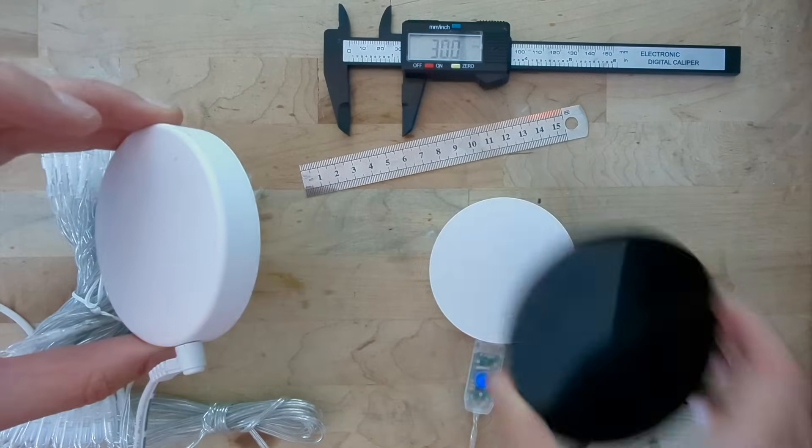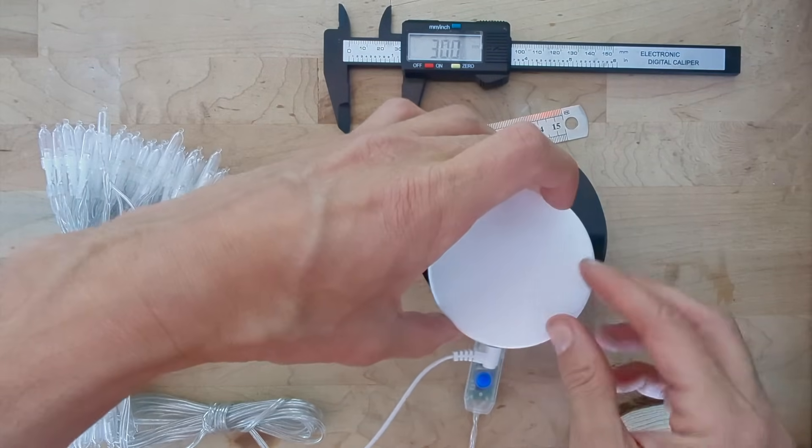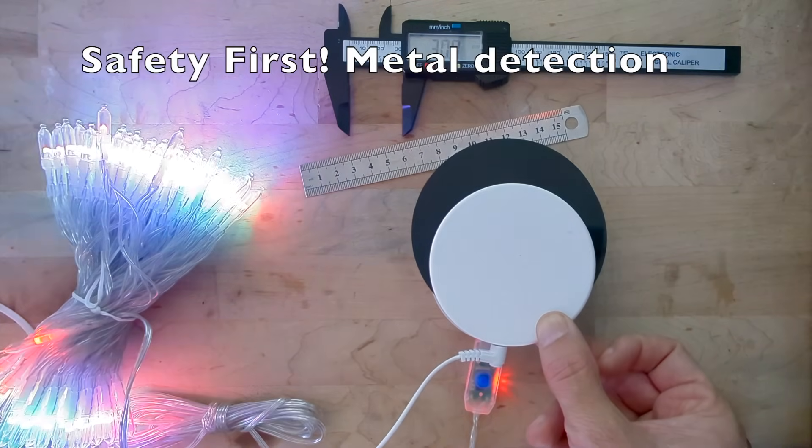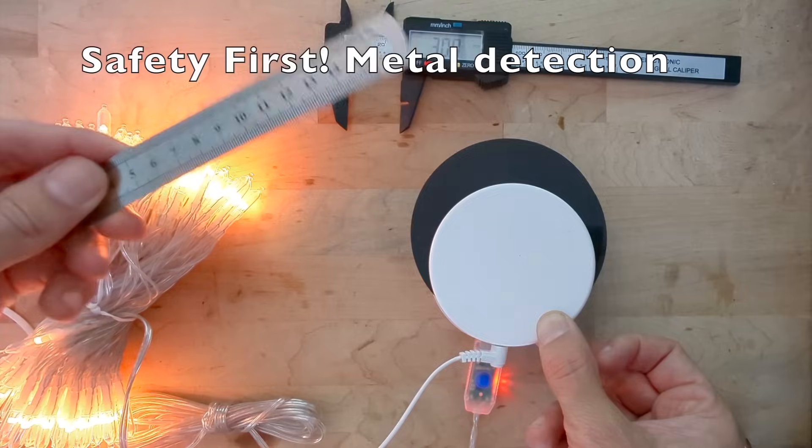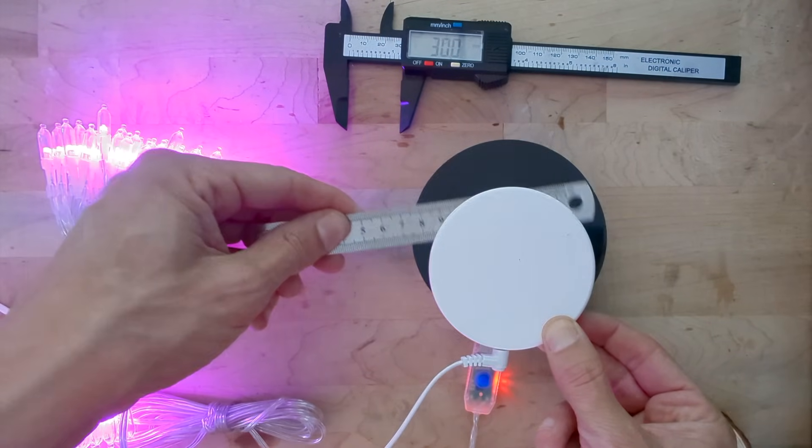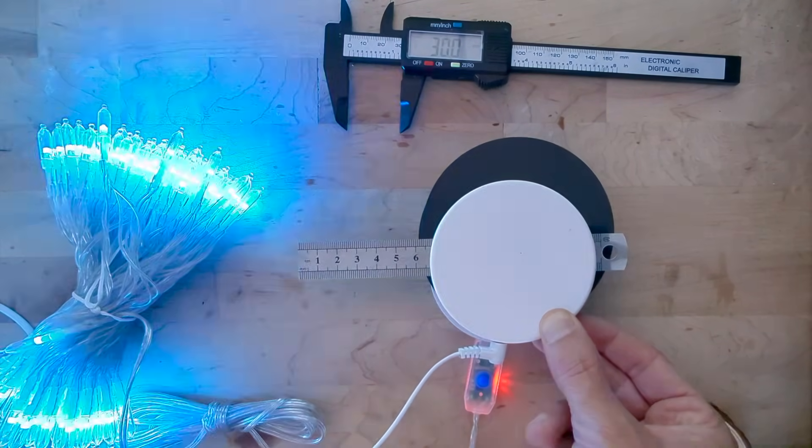Let's power the lights up again and show one more feature. We implemented foreign object detection. If a metal object is placed near the transmitter and is absorbing significant power, the transmitter will stop power transfer.